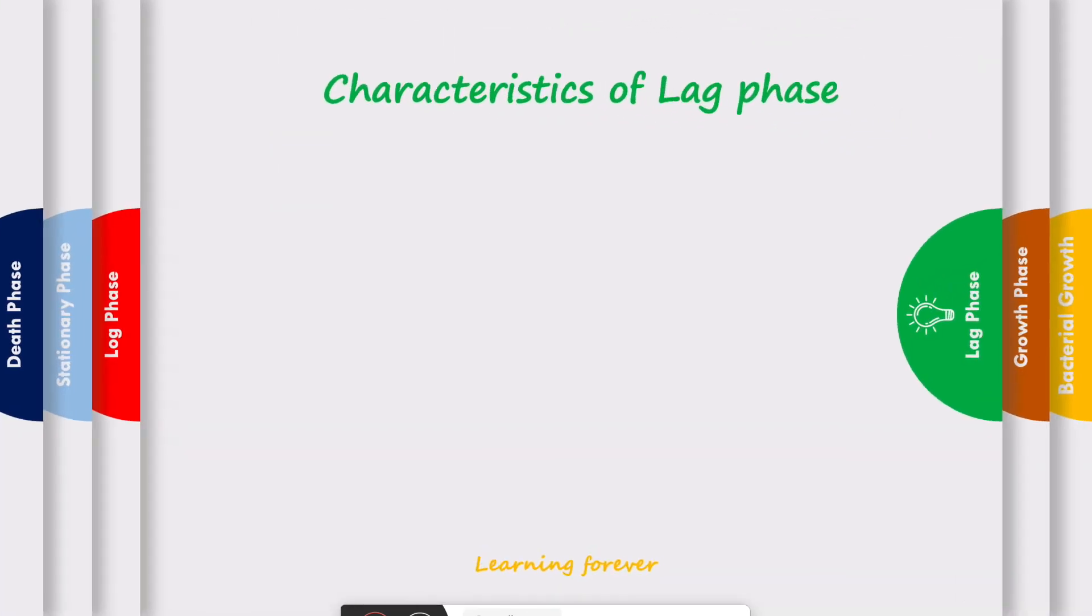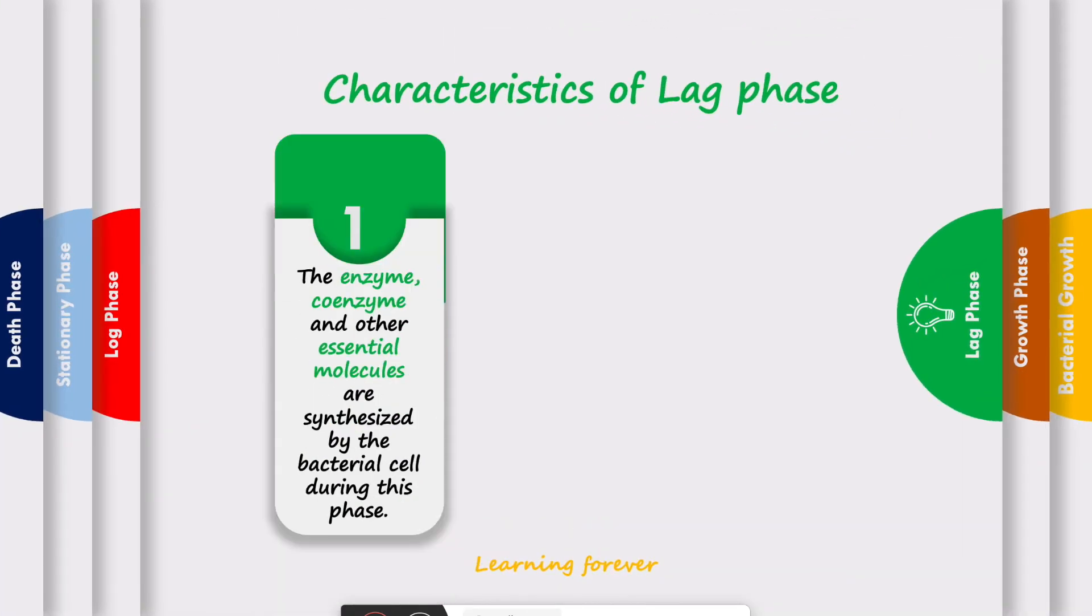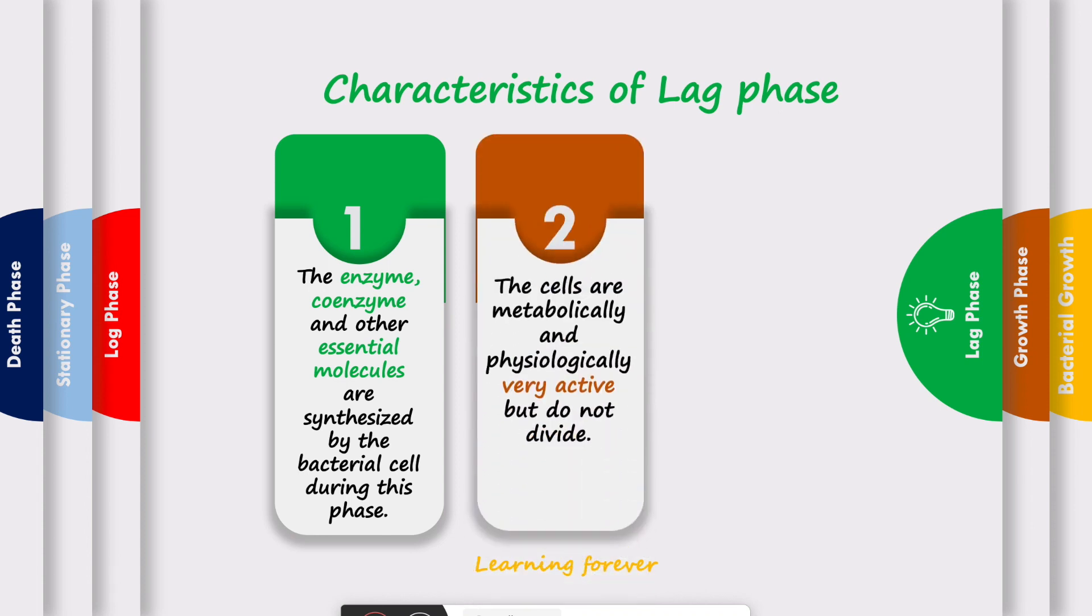Let's see characteristics of lag phase. Number one: the enzymes, coenzymes, and other essential molecules are synthesized by the bacterial cell during this phase. Number two: the cells are metabolically and physiologically very active but do not divide. This is the reason why there is a lag phase and initially there is no increase in the number of cells.